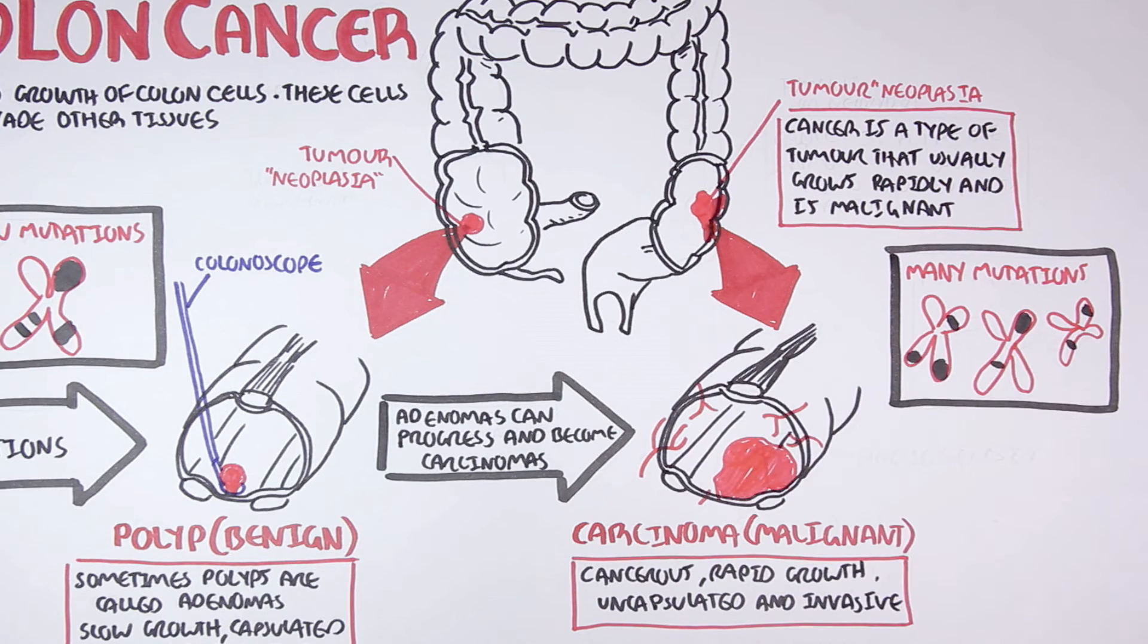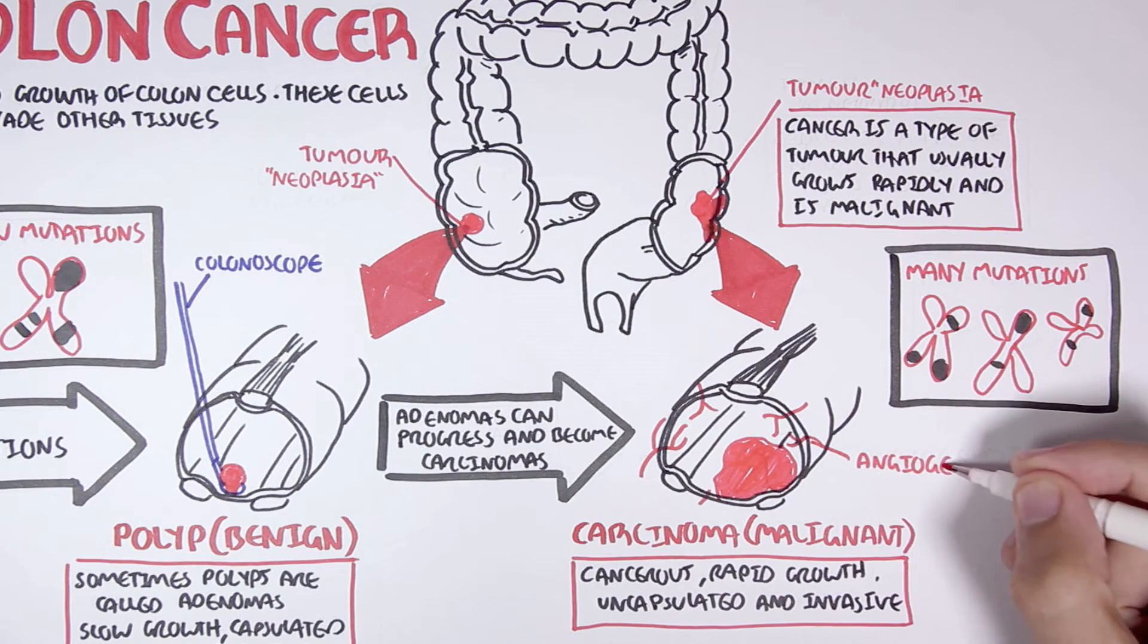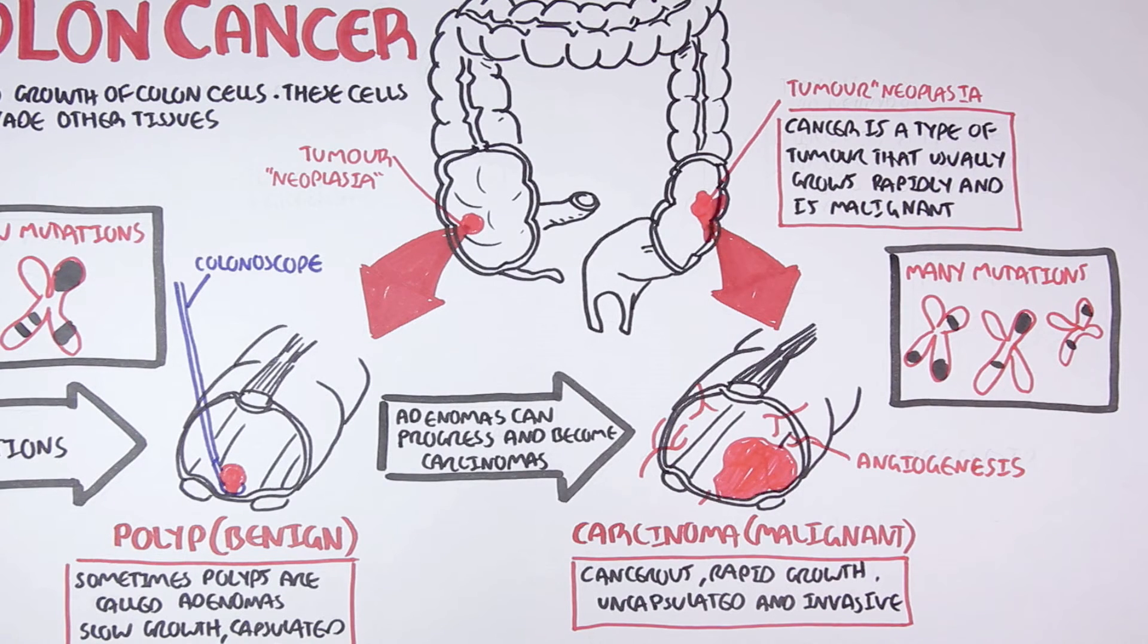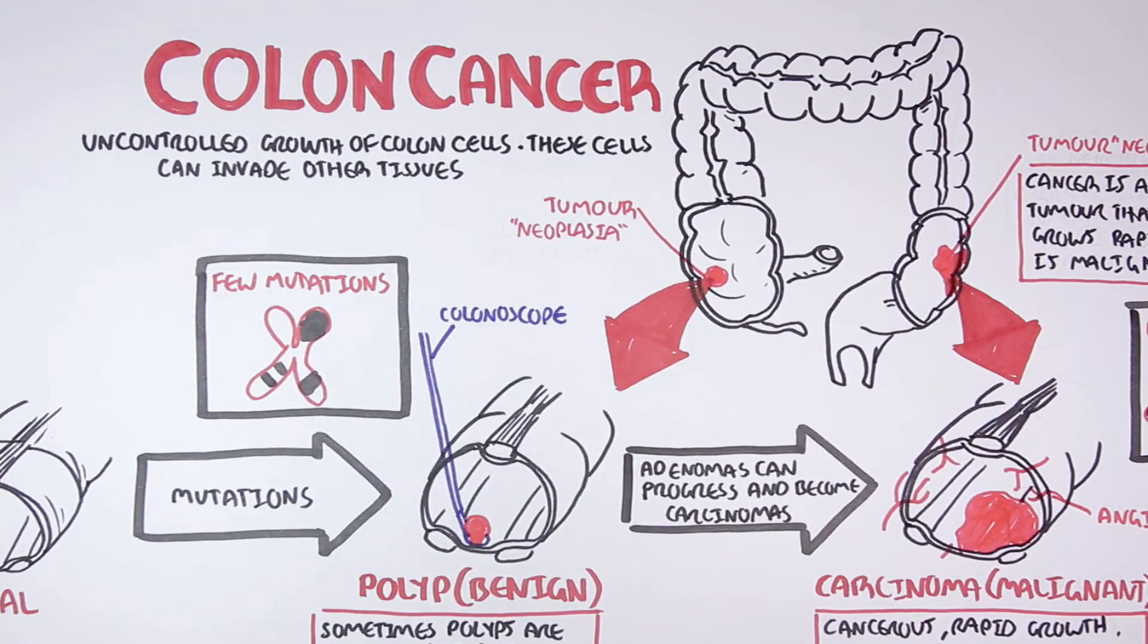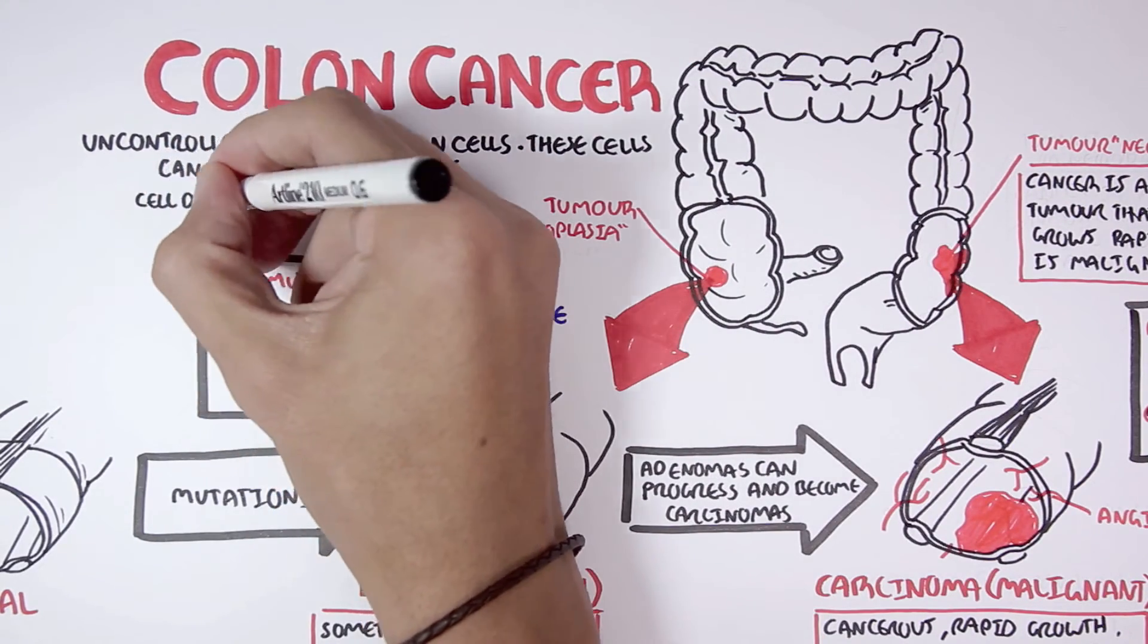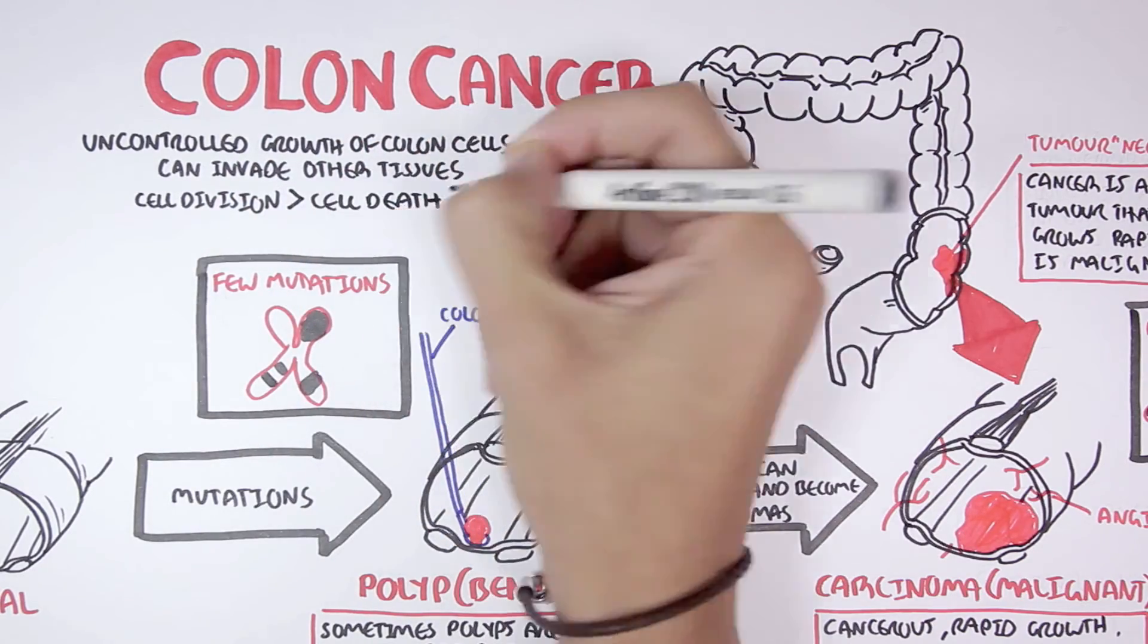Therefore, in and around tumors, a process called angiogenesis occurs, which is the formation and maturation of blood vessels. A good way to understand what is happening in tumors and cancer is that there are more cells dividing than there are cells dying.